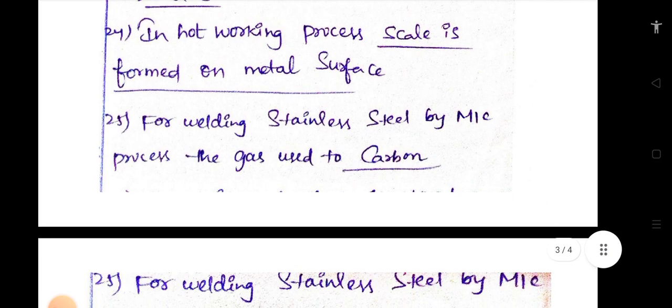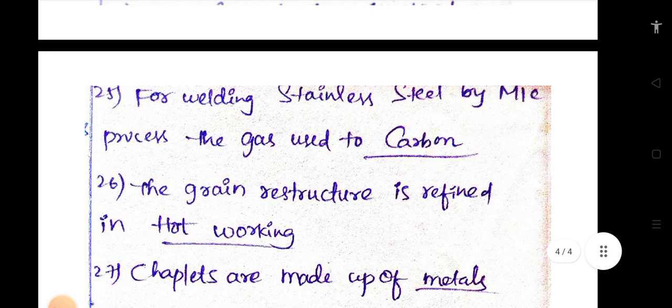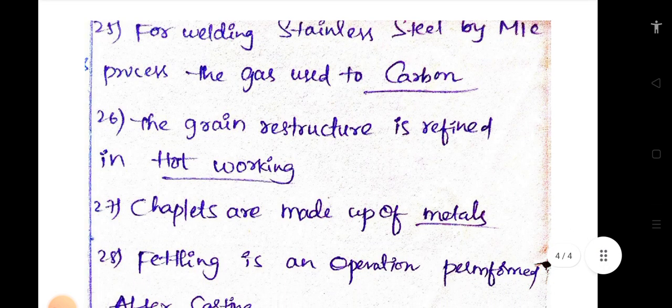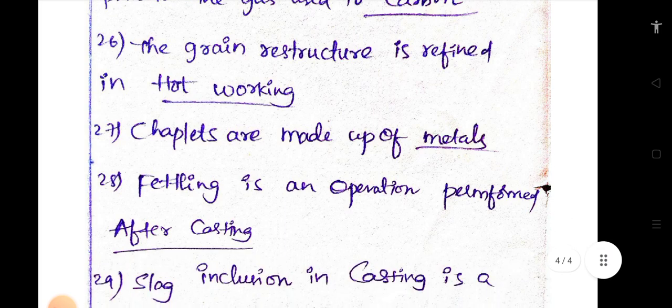For welding stainless steel by MIG process, the gas used is carbon. For welding stainless steel, the grain structure is refined in hot working. Chaplets are made up of metals. Fettling is an operation performed after casting.